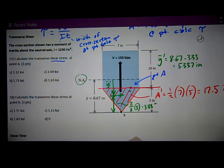So now I get Q just by multiplying those two numbers together. So Q is 5.337 Y bar prime times A prime, which is 17.5. And I get 93.39, or 93.4.